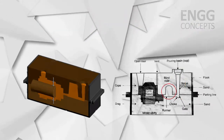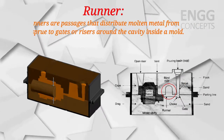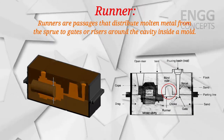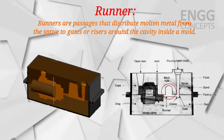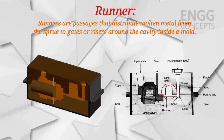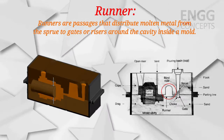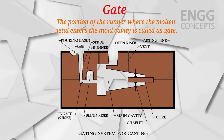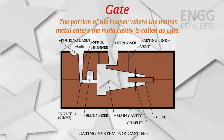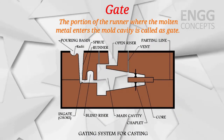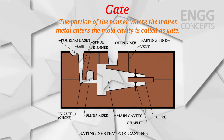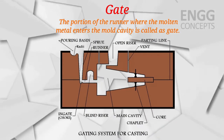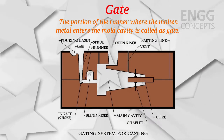After reaching the sprue base, the molten metal enters the runner. Runners are passages that distribute molten metal from the sprue to gates or risers around the cavity inside the mold. Runners slow down and smooth out the flow of liquid metal and are designed to provide an approximately uniform flow rate to the various parts of the mold cavity. The portion where molten metal enters the mold cavity is called the gate. After solidification of the molten metal, gates must be removed by machining.